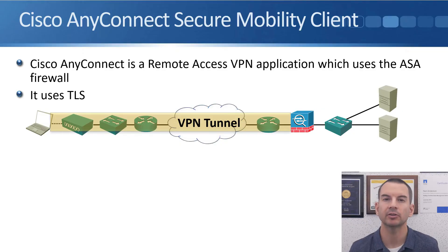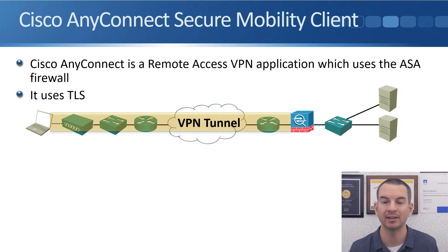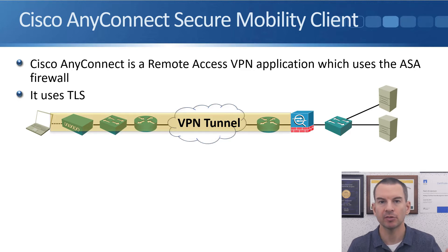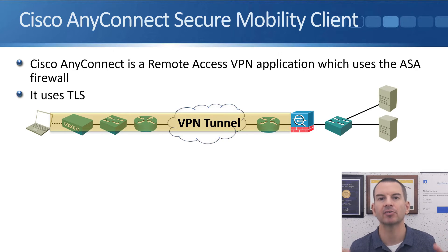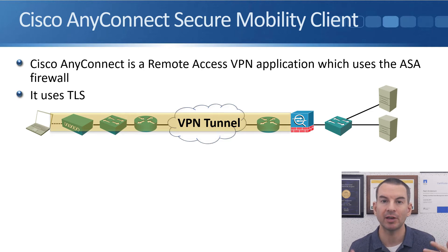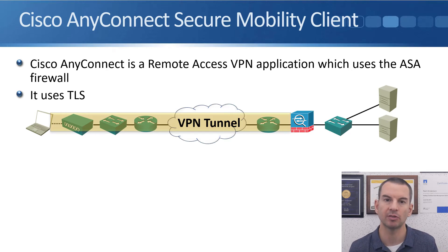In this lecture you'll learn about client-to-site remote access VPNs with the Cisco AnyConnect client. The Cisco AnyConnect client is a remote access VPN application which uses the ASA firewall. In the last lecture we configured the site-to-site VPN, and those tunnels can terminate either on a firewall or a router — the firewall being the Cisco ASA. With the AnyConnect client, it's going to terminate on the ASA firewall, not on a Cisco router. And where site-to-site tunnels use IPSec, the AnyConnect remote access VPN uses TLS.